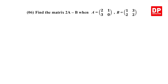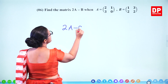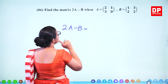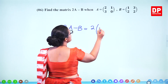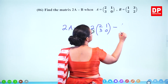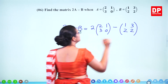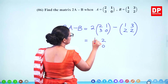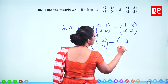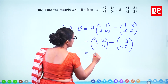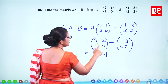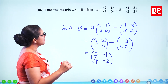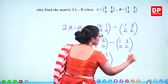Question number 6. Find the matrix 2A minus B. Both are 2×2 matrices so you can subtract or add. First multiply all elements of A by 2, giving 4, 2, 6, 0. Now subtract the corresponding elements of B: 4 minus 1 is 3; 2 minus 3 is minus 1; 6 minus 2 is 4; 0 minus 2 is minus 2. That's the answer — also a 2×2 matrix. Two marks.